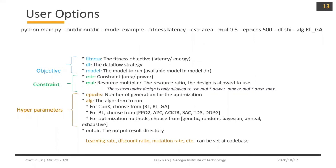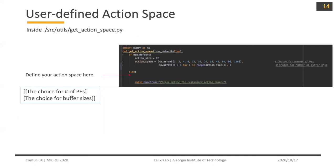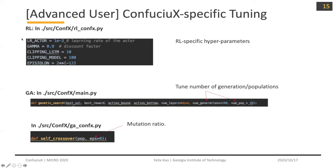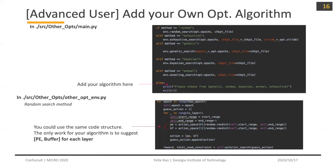Next, let's discuss some considerations and how to tune hyperparameters. We have a default action space with 12 different actions, but you can define your own action space by putting the first row as the choice of number of PEs and the second row as the choice of buffer sizes. For advanced users, Confucius-specific tuning is available: in the RL algorithm you can tune the learning rate, discount ratio, and clipping range; in the GA algorithm you can tune the number of generations, population size, and mutation rate.